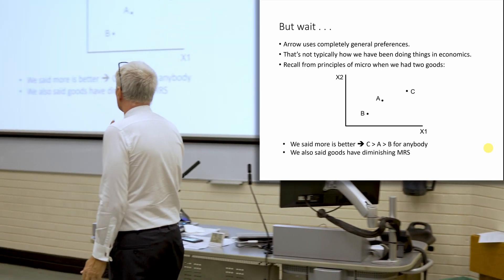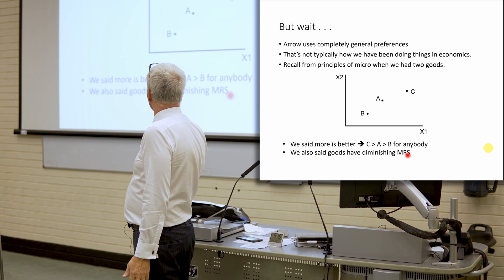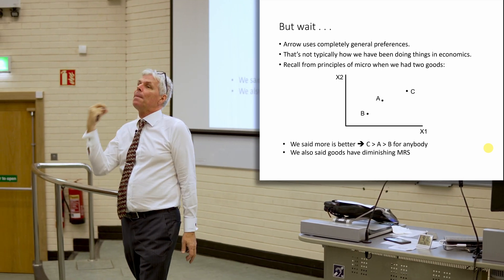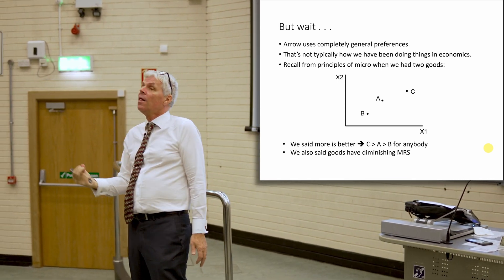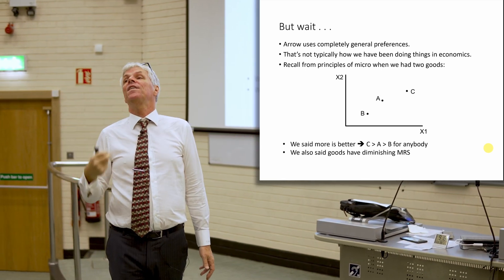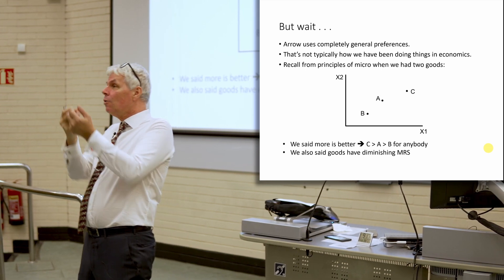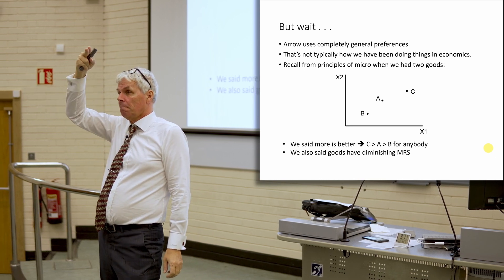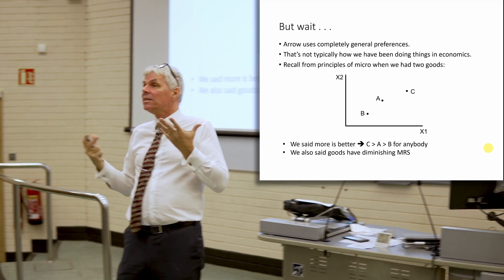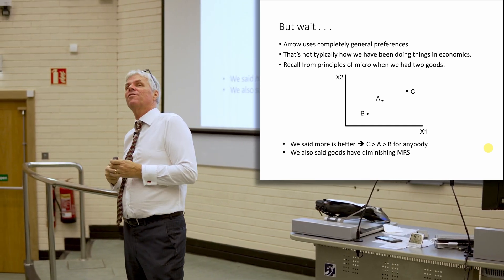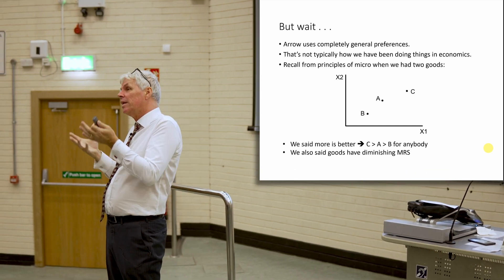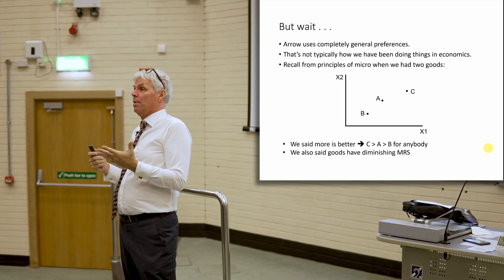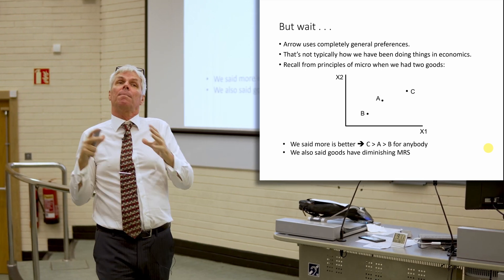We also made more assumptions, which are a little more dubious, saying that goods had diminishing marginal rates of substitution. That is, when you go out on Halloween, the first candy you get gives you a lot of happiness. The second candy is also great. The third is nice, the fourth is pretty good, the 50th candy is making you ill. And so we impose, for a lot of things, that diminishing marginal rate of substitution, which gives us the indifference curves the way we normally draw them.